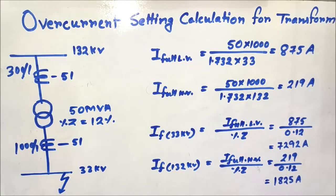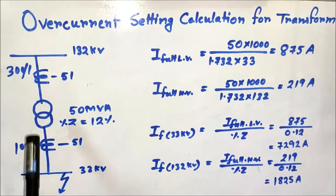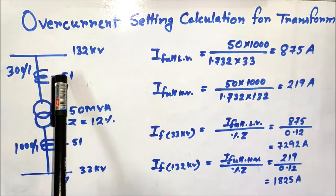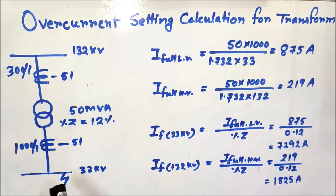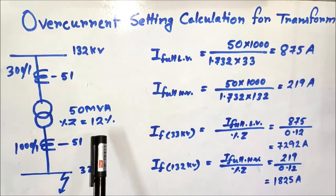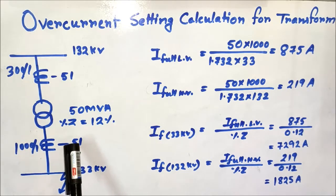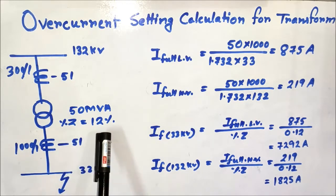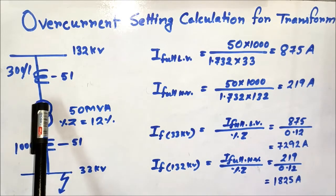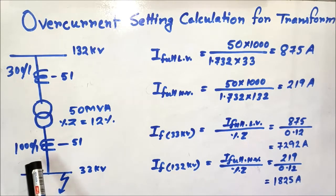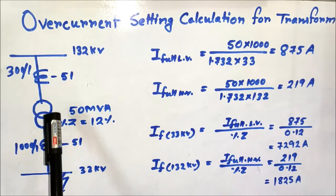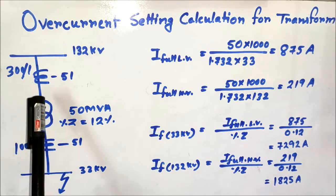Hello friends, welcome back to my channel. Today I will discuss overcurrent setting calculation for a transformer. In this figure, you can see a 132kV bus with a transformer connected between 132kV and 33kV. The transformer rating is 50 MVA, 132/33kV, with a percentage impedance of 12%. The HV CT ratio is 300/1 and the LV CT ratio is 1000/1. We will calculate the settings for both LV and HV overcurrent relays.